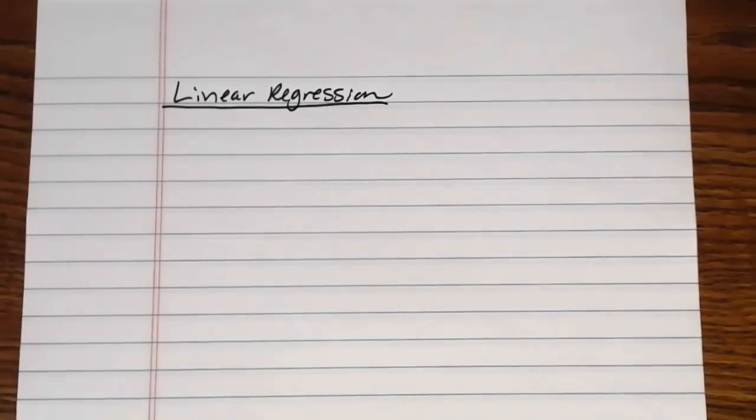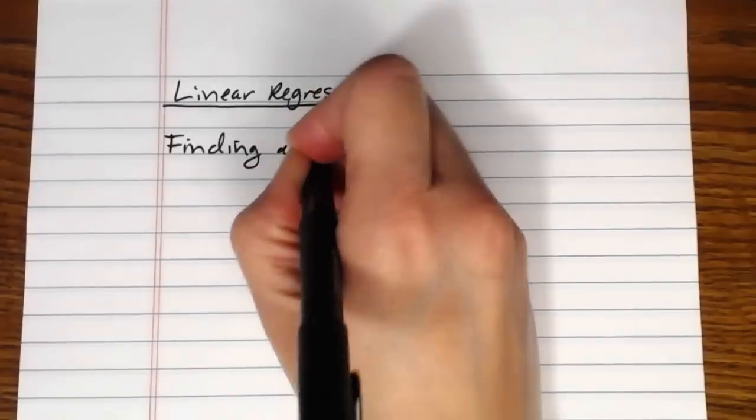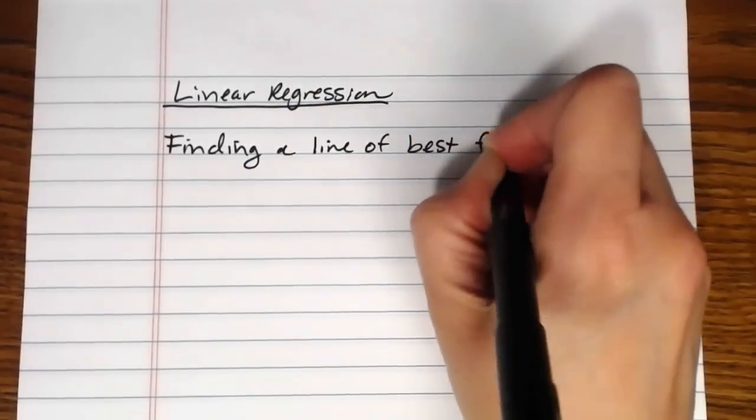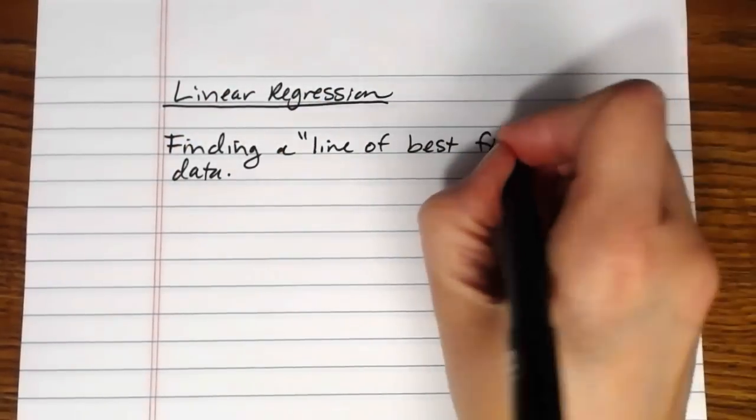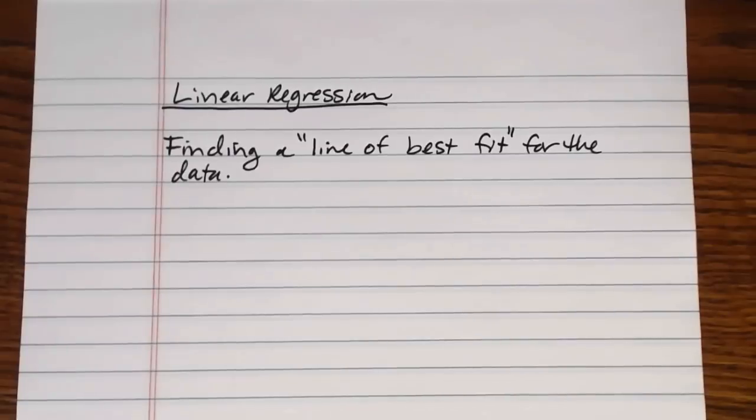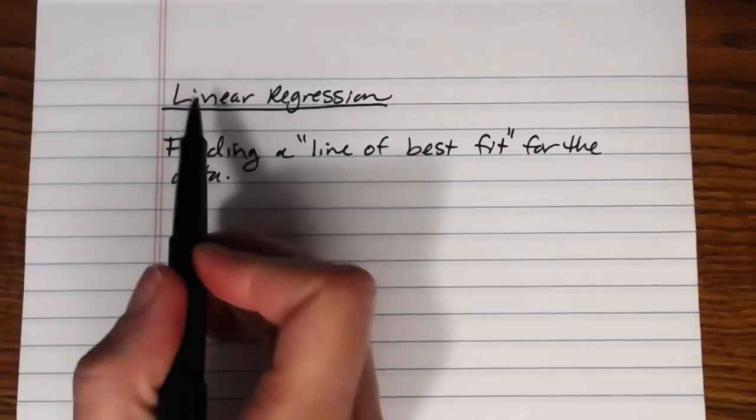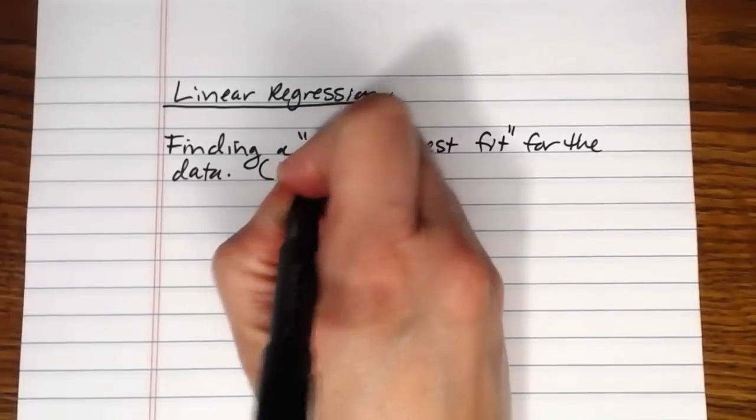In this video we're going to be taking a look at linear regression and basically what linear regression has to do with is finding a line of best fit for the data. Now it turns out despite the fact that best seems to imply that there is only one, there's a bunch of different ways to find lines of quote unquote best fit for a data set and the one that your book focuses on is linear regression this process which sometimes you will also hear referred to as the least squares line or using the method of least squares.